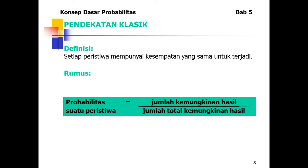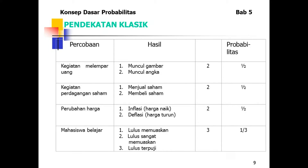Pendekatan klasik: setiap peristiwa mempunyai kesempatan yang sama untuk terjadi. Rumusnya: probabilitas suatu peristiwa = jumlah kemungkinan hasil suatu peristiwa dibagi jumlah total kemungkinan hasil. Contoh: melempar uang — muncul gambar atau muncul angka, probabilitasnya 1/2. Perdagangan saham — menjual atau membeli saham, probabilitasnya 1/2. Perubahan harga — inflasi atau deflasi, probabilitasnya 1/2.